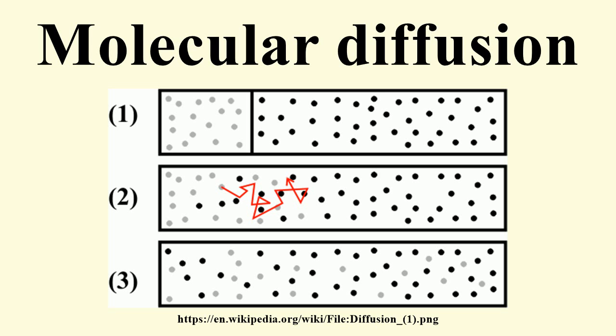This type of diffusion can be followed using isotopic traces, hence the name. The tracer diffusion is usually assumed to be identical to self-diffusion.